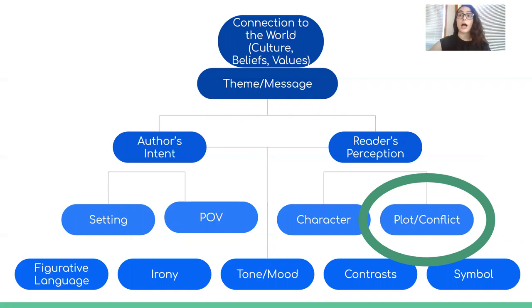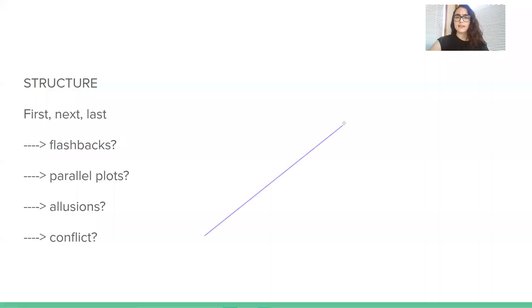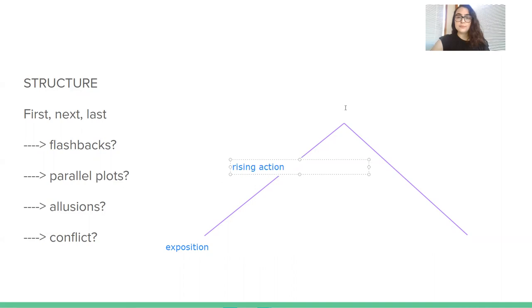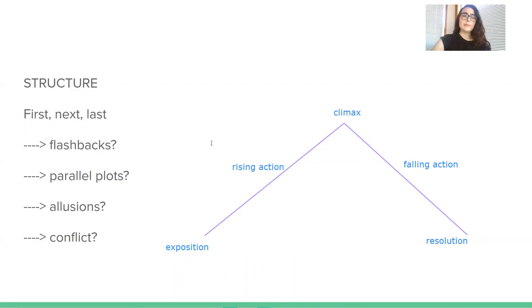So today we're going to focus on plot. What you might be more familiar with is something called Freytag's Pyramid, or you might have just heard it called a plot diagram. It looks something like this — you have exposition, then the rising action, up here would be the climax, here would be the falling action, and then finally you would have the resolution or the denouement, the French term.